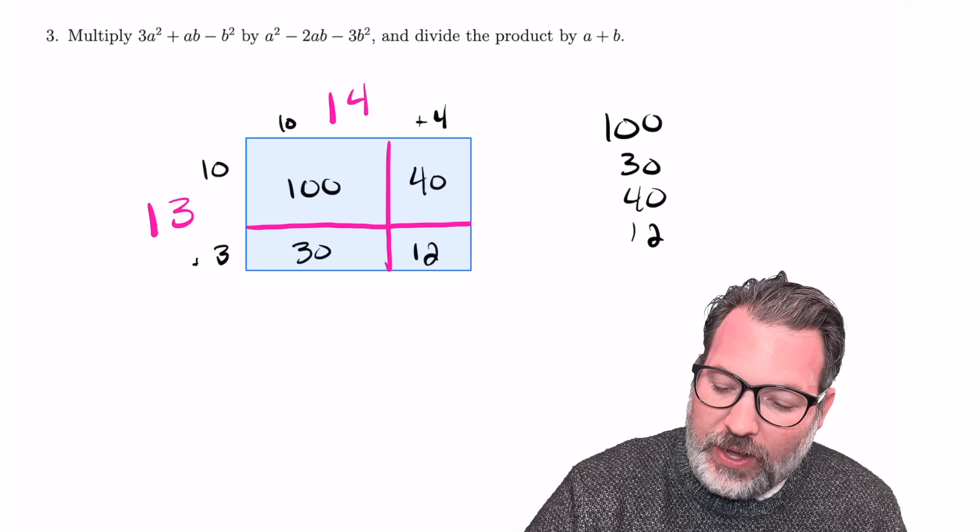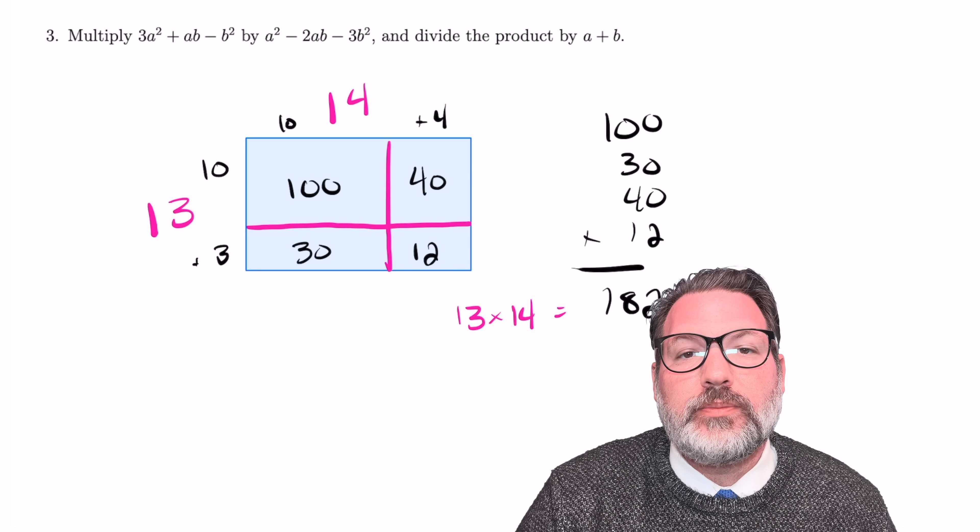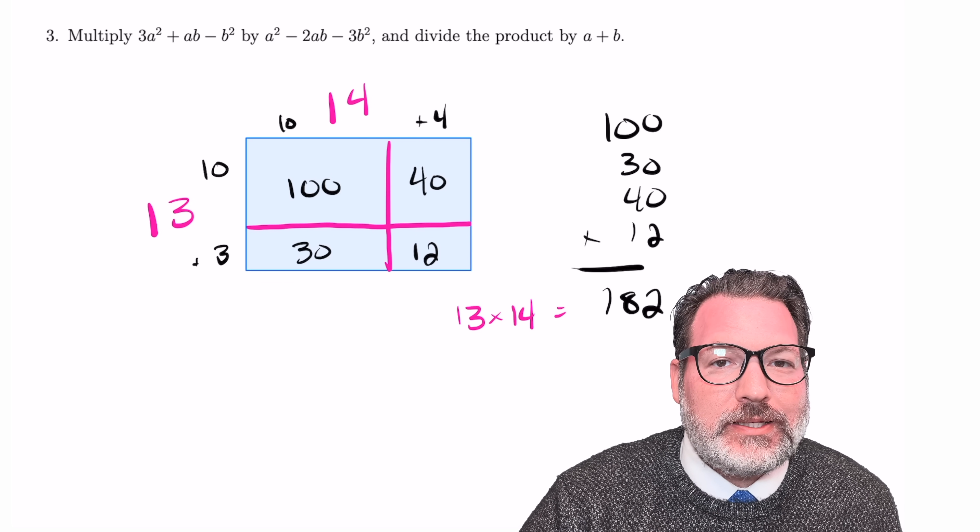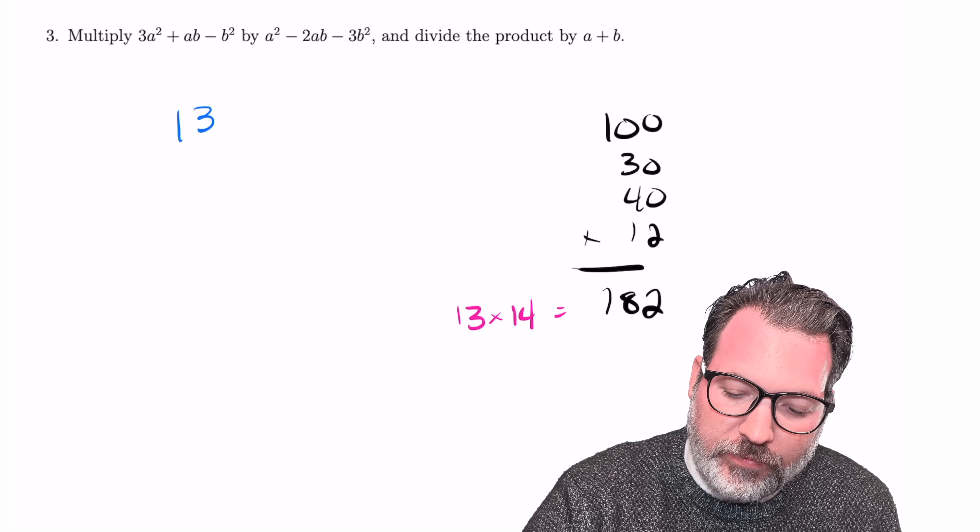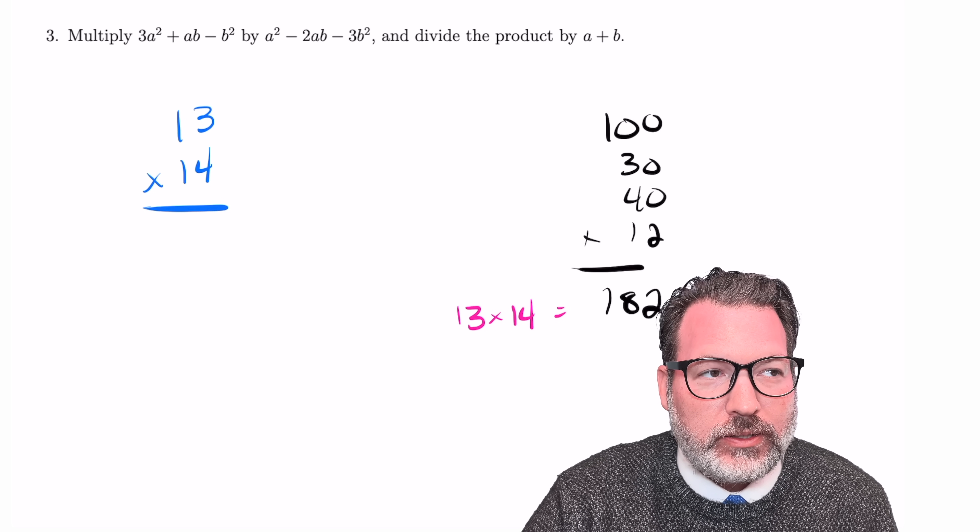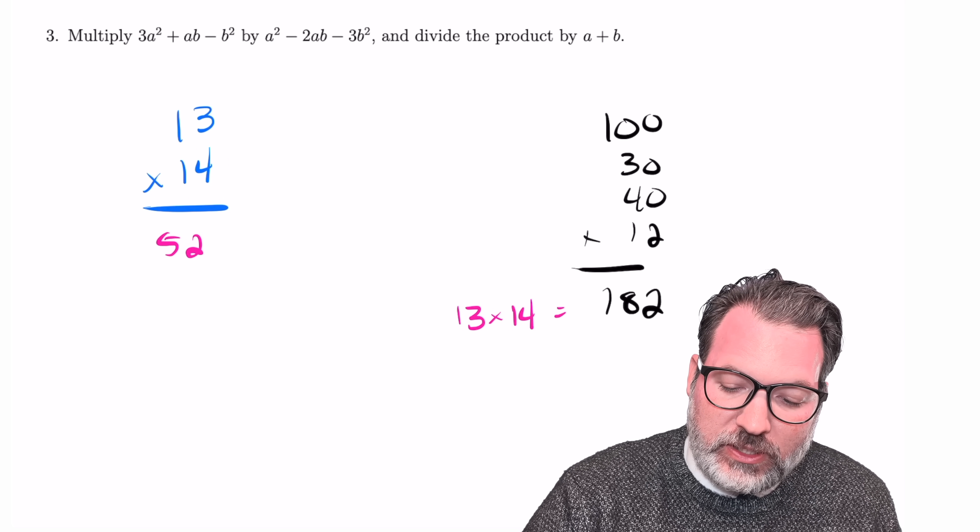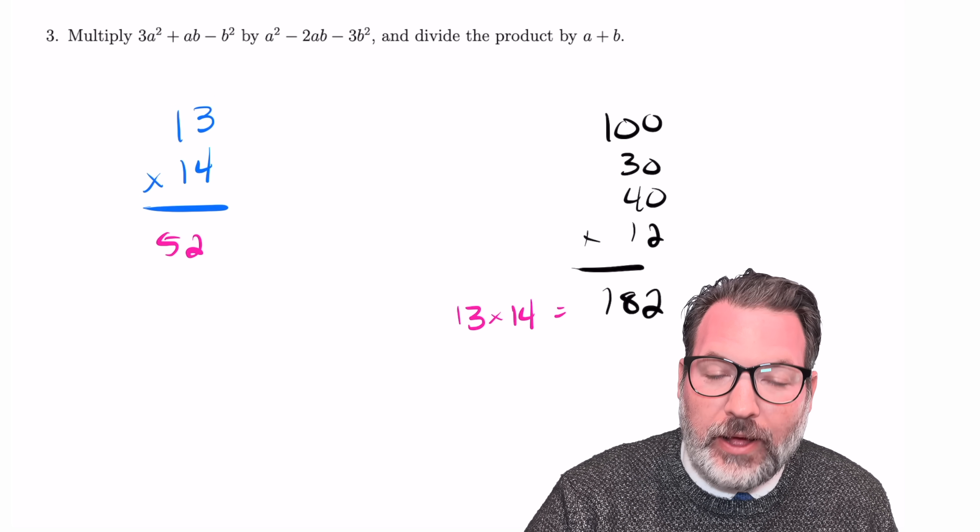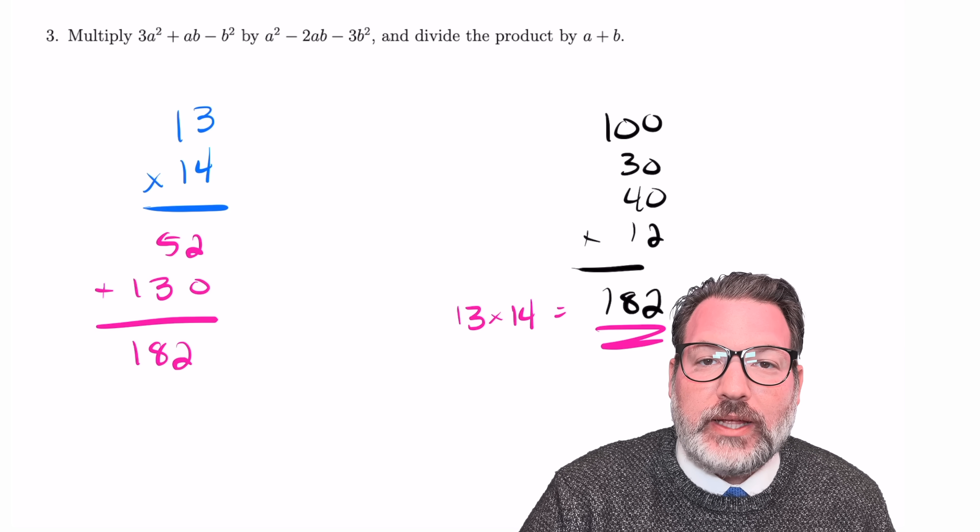If we take these partial products and we add them together, then we end up with 182, which not at all coincidentally happens to be the product of 13 times 14. The source of the controversy is this does not look exactly the same way as the standard algorithm for multiplication. Specifically, if you perform the standard algorithm for multiplication, then you would stack the 13 and the 14 on top, and you would still take partial products, just two partial products fewer. You would compute 4 times 13 first, that would give you 52, and then you would compute 10 times 13. That's why we move one space over in the standard algorithm. That would give you 130, and of course, when you add that together, you get the same product of 182.